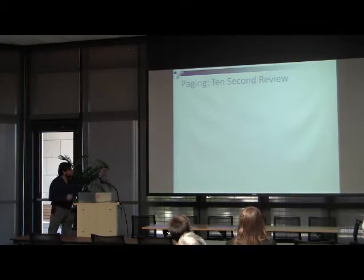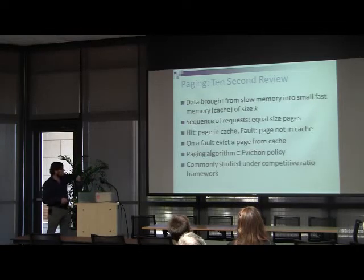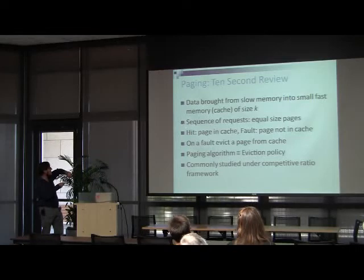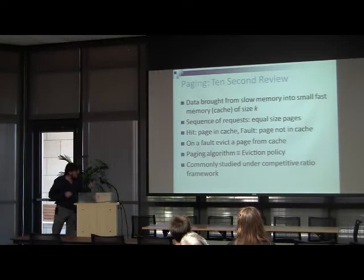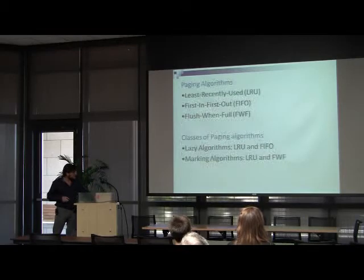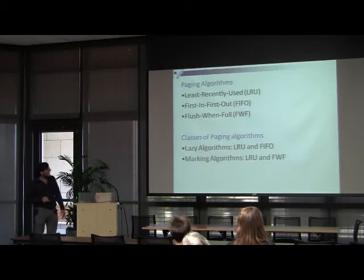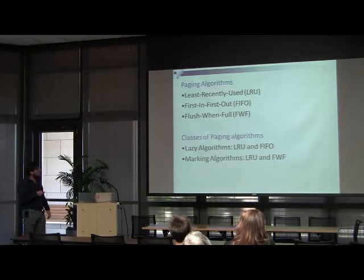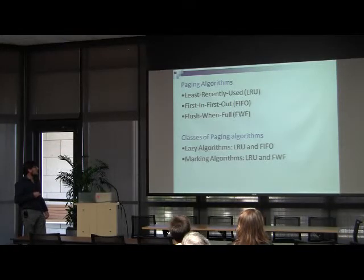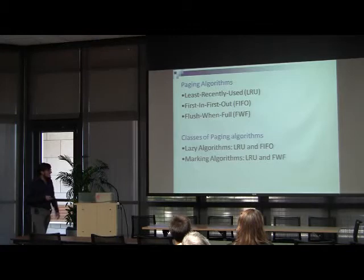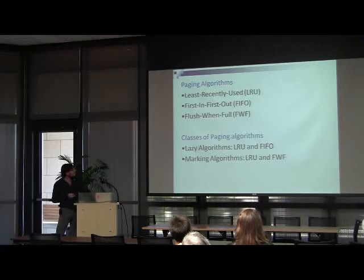I assume most of you are familiar with paging, but for those of you who saw it too long ago, I'll have a 10-second review. So there's a cache of size k, there's a slow memory, there's a fast memory. We're trying to decide who gets evicted from a page or not. The better known algorithms are LRU — least recently used — FIFO — first in, first out — flush when full, which is really bad but very easy to implement in hardware, so it exists out there. There's a class of algorithms called lazy algorithms, marking algorithms, and others, but these are the more famous ones.